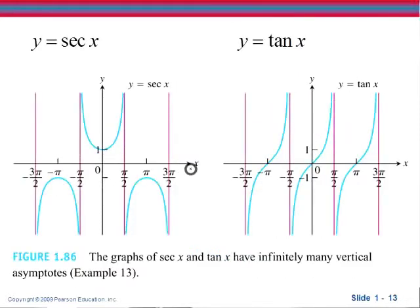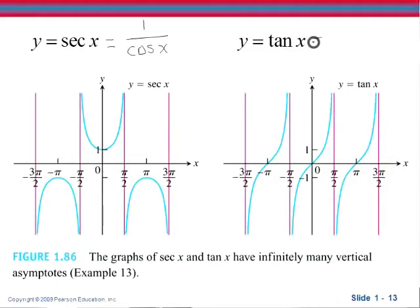Some other graphs that you need to remember that have asymptotes are the graphs of y equals secant x and y equals tangent x — though these are not the only two. Y equals cosecant x and y equals cotangent x also have infinitely many vertical asymptotes. The reason is that secant x is actually 1 divided by cosine x, so everywhere that cosine x is 0, you will have a vertical asymptote. Tangent x is sine x divided by cosine x, so again, everywhere that cosine x is 0, you will have a vertical asymptote.